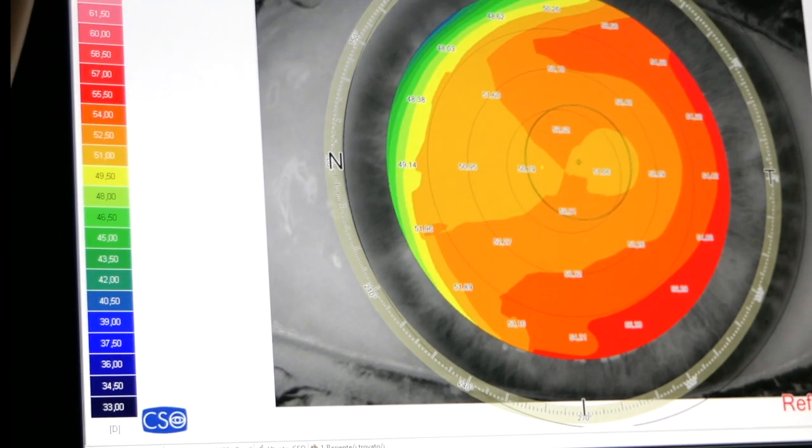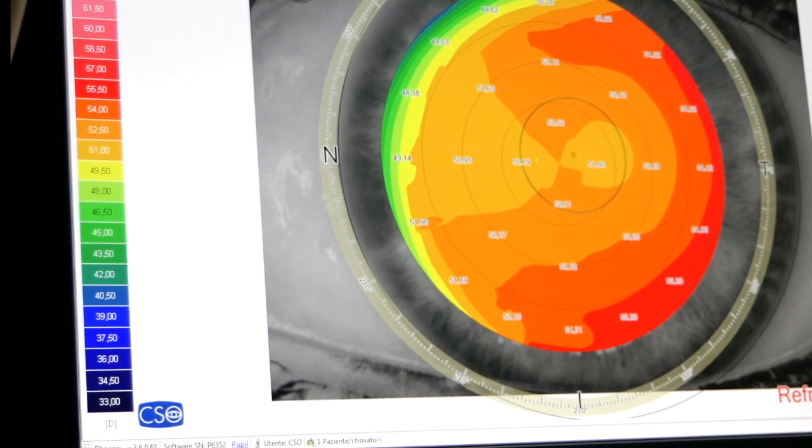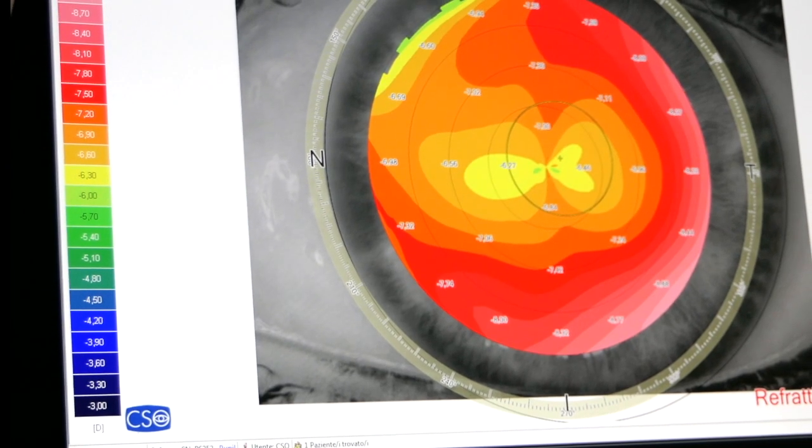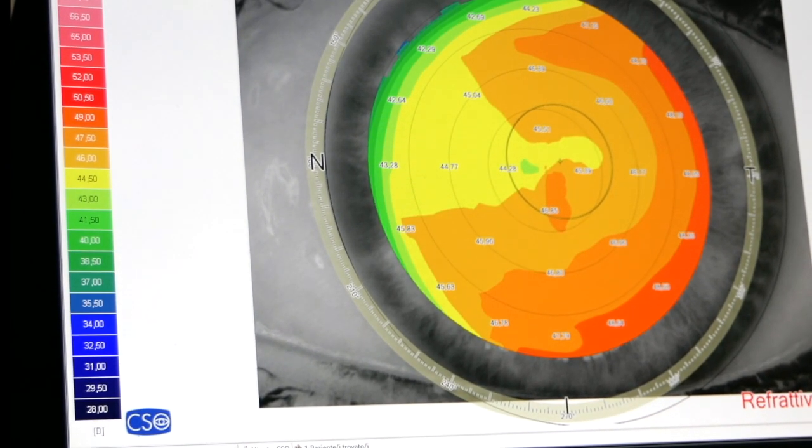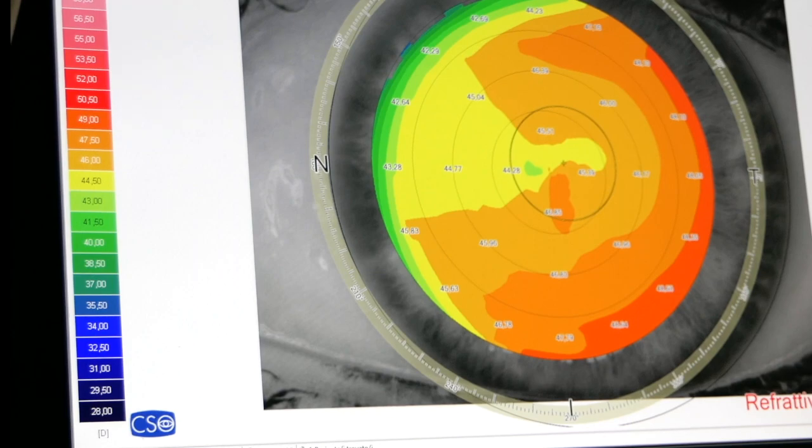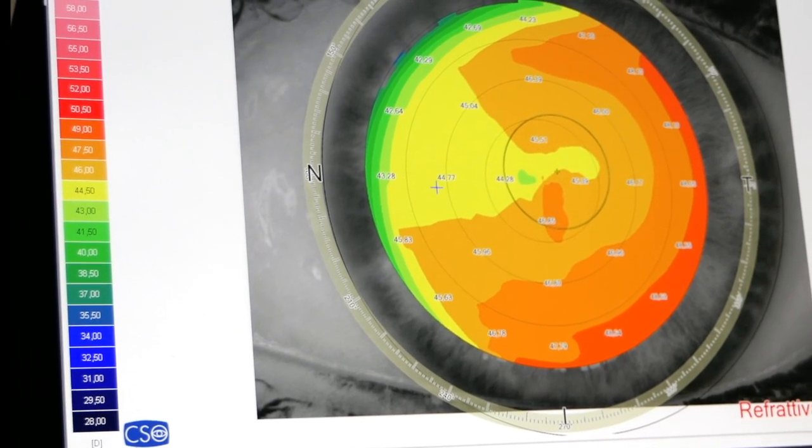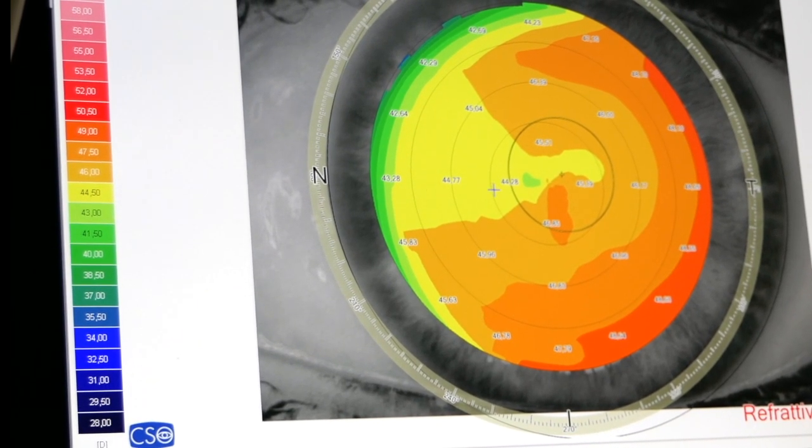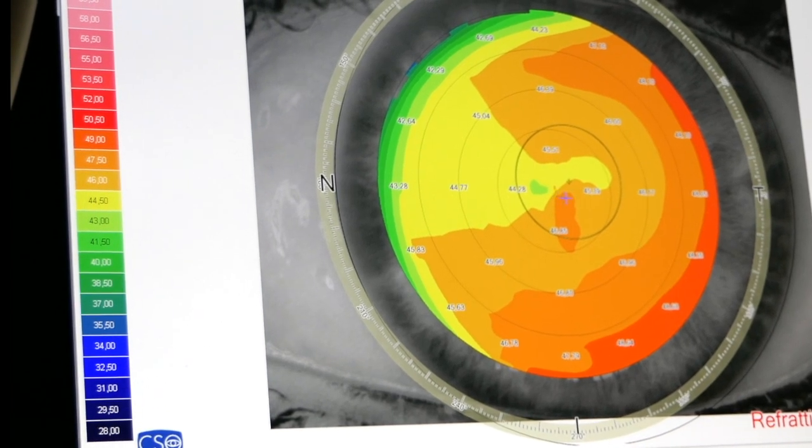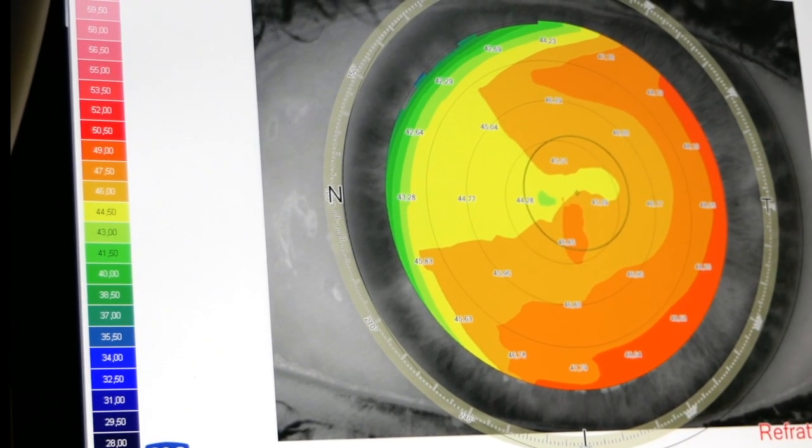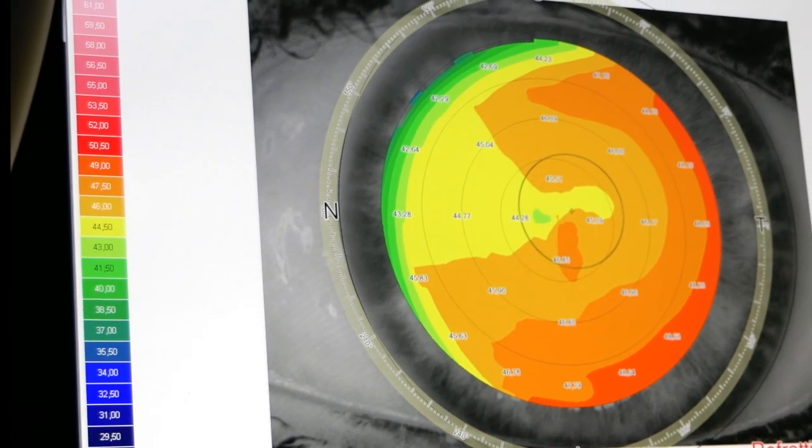Then there is the anterior, posterior, and equivalent refractive elaboration, in which the fact that the cornea is considered in each point in diopters, that is a lens with a given power in that given point, is taken all into consideration.